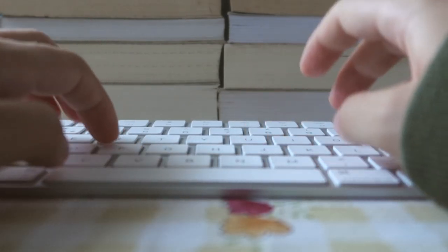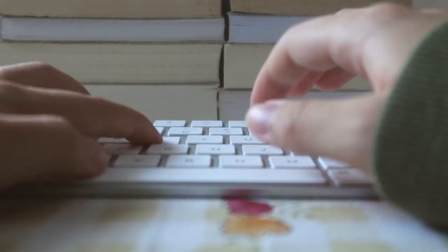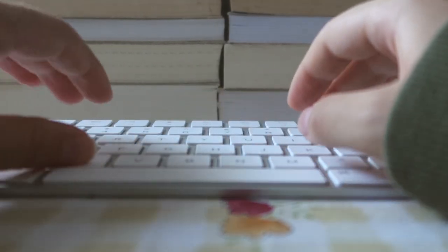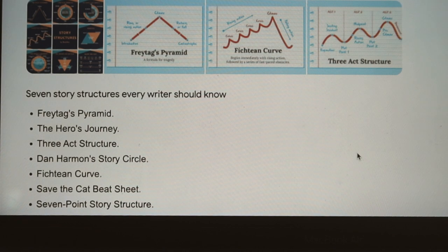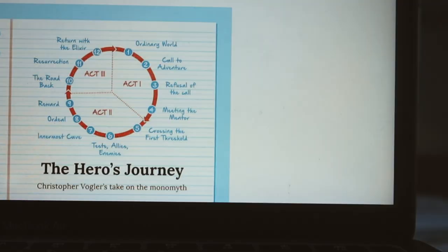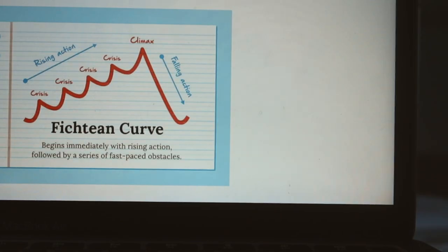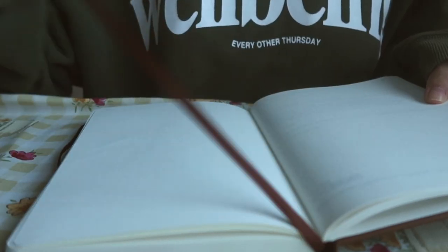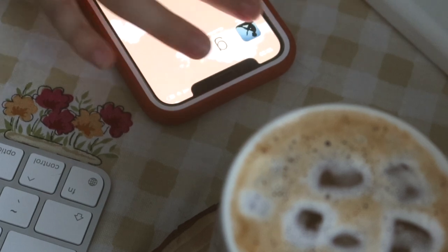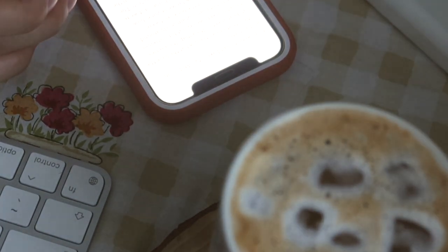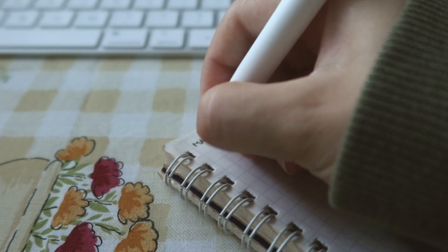I believe that in order to outline a novel effectively, writers must be well aware of story structure — which means not just one structure like the three-act one, but many structures, as well as different types of beats. Being clear about the point of a beat allows me to focus better on the story itself. My outlining process always starts with me picking up Save the Cat Writes a Novel and writing down the main beats on my notebook.